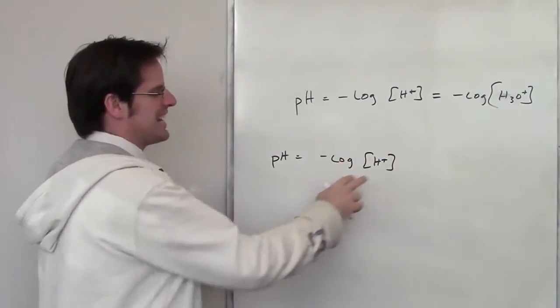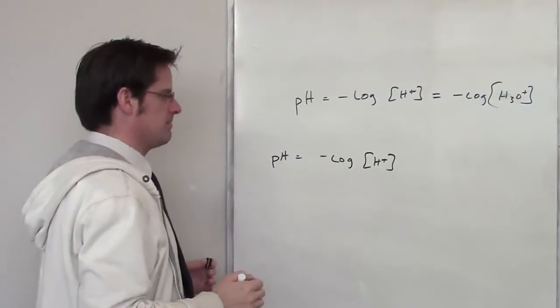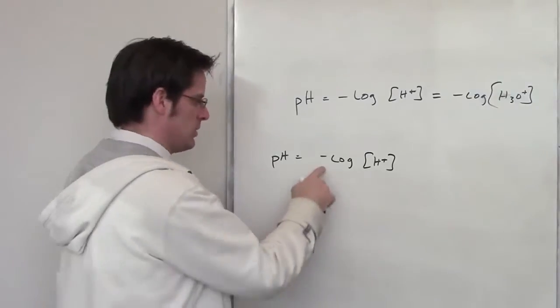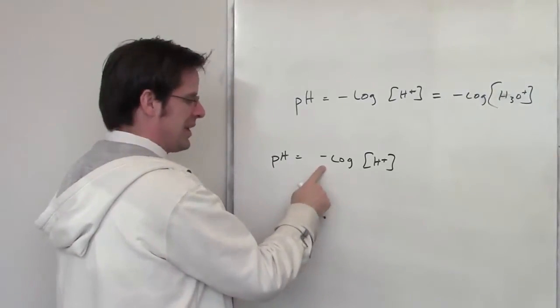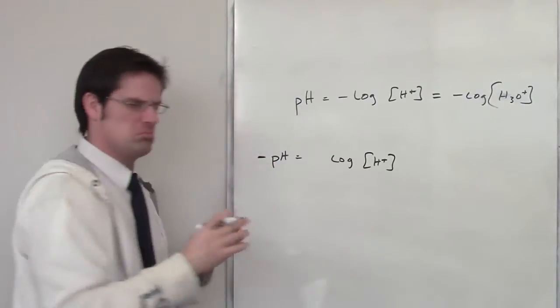What I want to do is algebraically get H+ concentration to be on one side and everything else on the other. First things first, I can times both sides by a negative 1 to get rid of this negative sign. That will give me a negative pH on the left side.